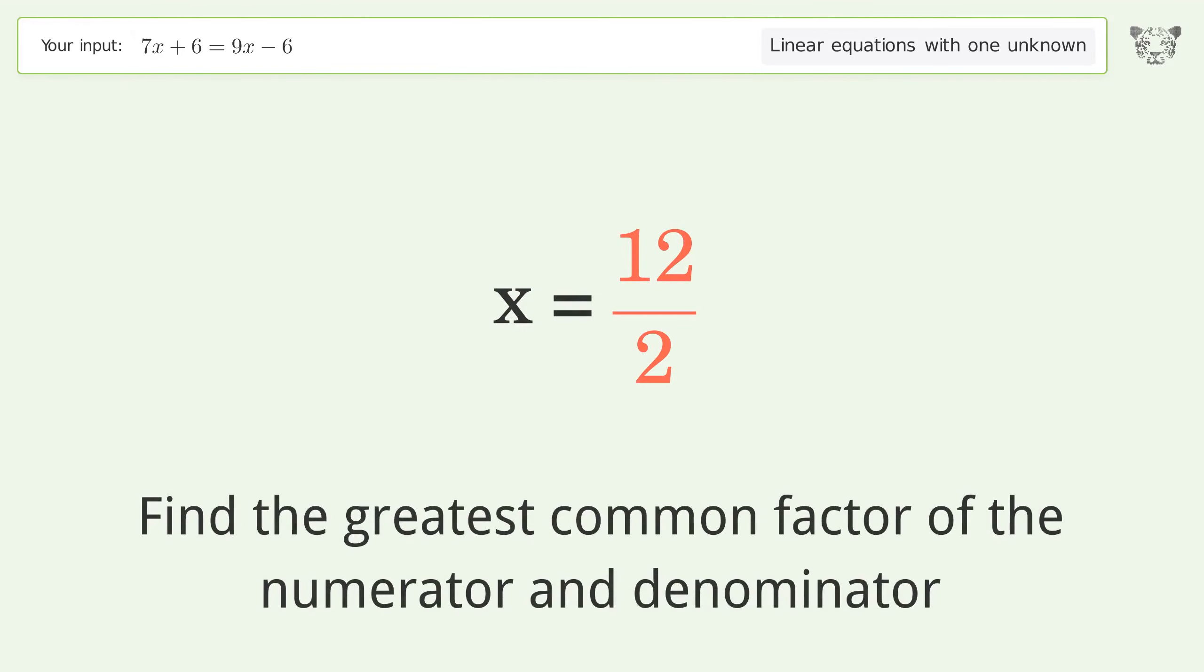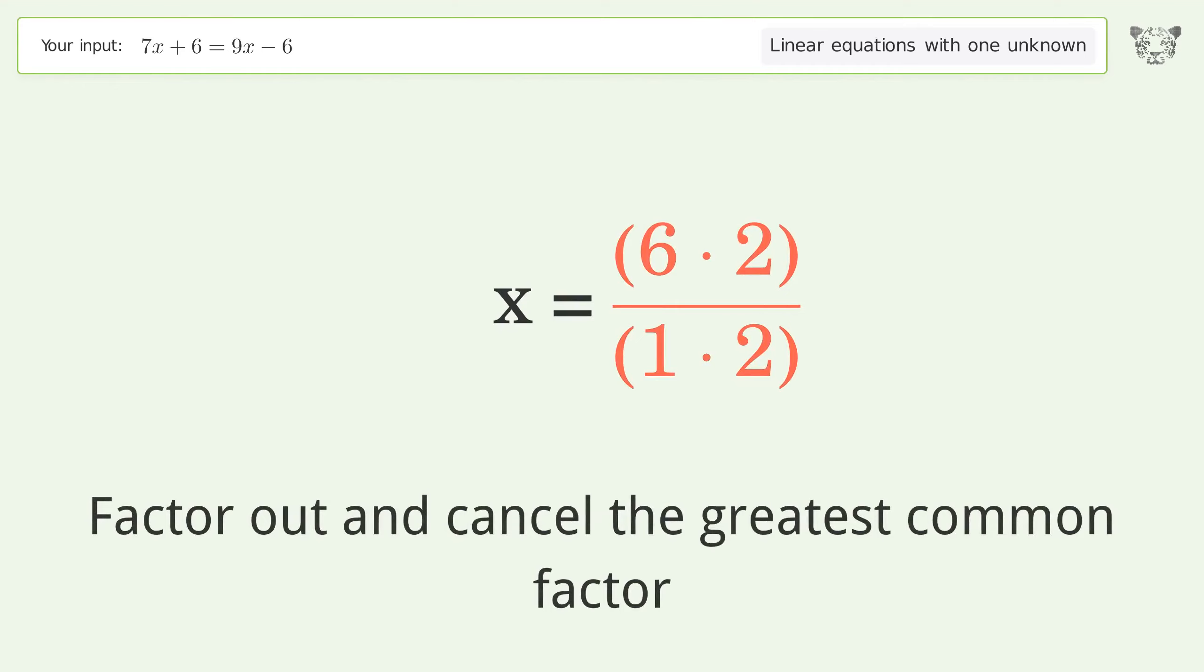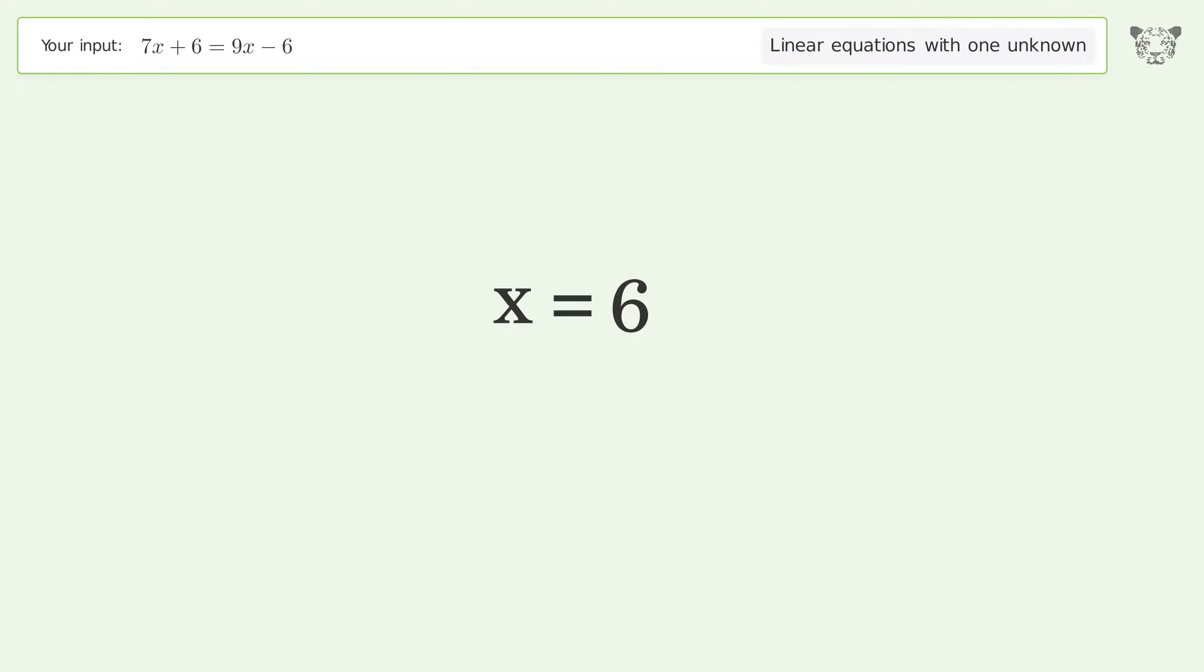Find the greatest common factor of the numerator and denominator. Factor out and cancel the greatest common factor. And so the final result is x equals 6.